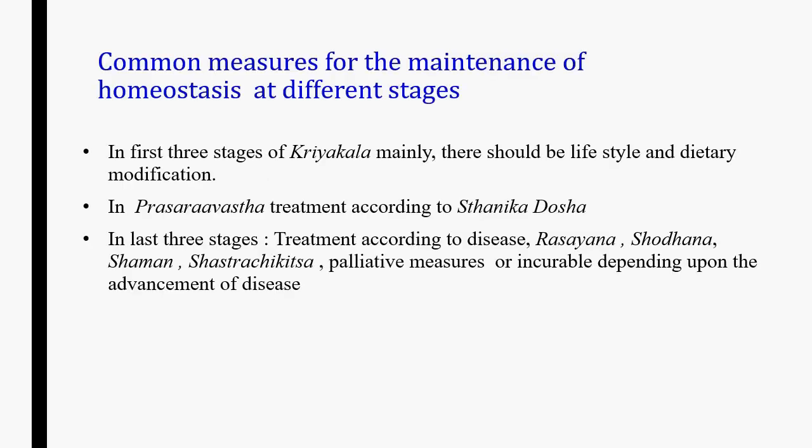Common measures for the maintenance of homeostasis at different stages: In the first three stages of Kriya Kaal, lifestyle and dietary modification should be advised. In Prasaravastha, treatment should be done according to the Sthanik Dosh — if Vata encroaches on Pitta's site, Pitta should be managed; if Pitta encroaches on Kapha's site, Kapha should be managed; if Kapha encroaches on Vata's site, Vata should be managed. In the last three stages, treatment according to the disease — including Rasayan, Shodhan, Shaman, Shastra Karma, and palliative measures — should be done.